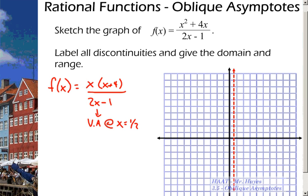And then from there, we have to figure out what the oblique asymptote is. The reason why you know you have an oblique asymptote is when you check for your horizontal asymptote, you're going to take the highest degree term over the highest degree term. So in this case, you've got x squared over 2x. That reduces to x over 2.